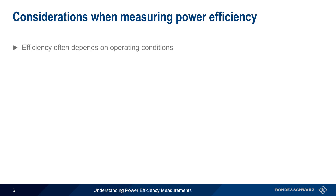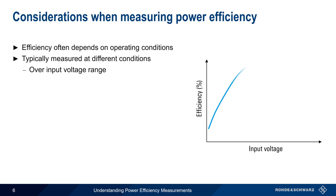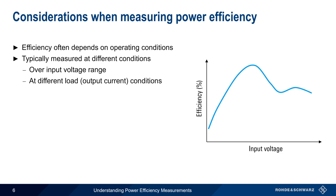The efficiency of a power supply or converter often depends on the operating conditions, and therefore efficiency is also typically measured at different operating conditions. For example, efficiency may vary with input voltage, or it may be dependent on the load or output current.